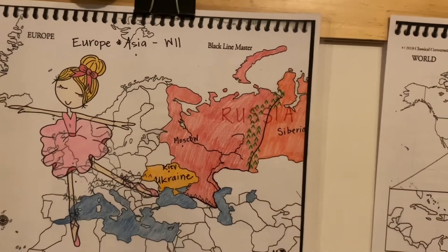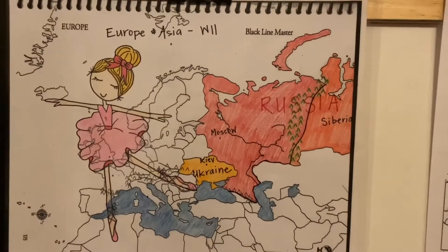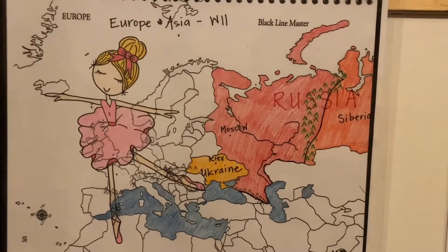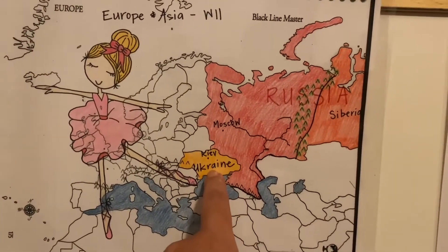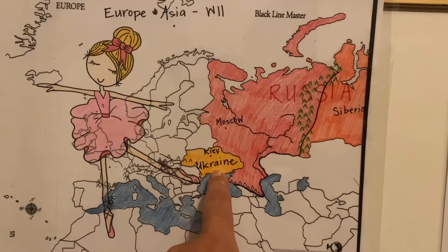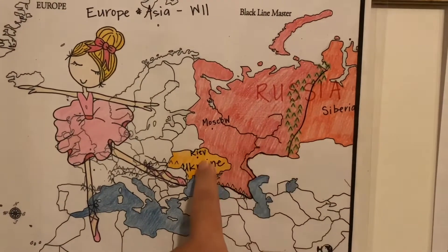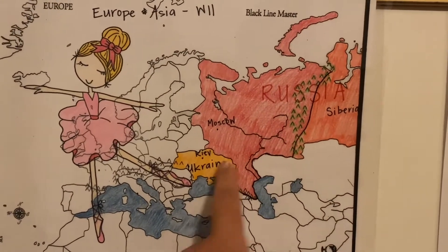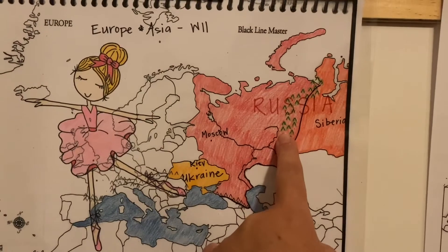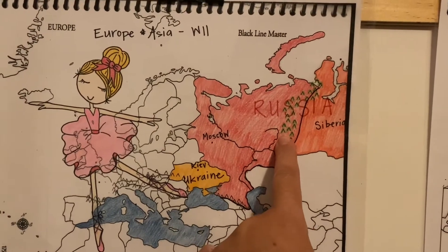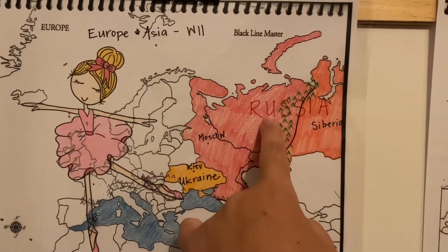How fun is that! I also want to say: Ukraine is a country just like Russia is a country — these are two different countries that we're learning about today. Moscow is the capital of Russia, located on the European side. Kiev is the capital of Ukraine.